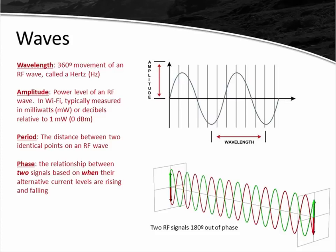The wavelength is an entire 360-degree movement of an RF wave — this is 1 hertz. Waves have important characteristics like amplitude, which is the strength or power of the wave. The strength attenuates or weakens as it travels through free space and as it passes through materials like walls, doors, and floors. The period is the distance between two identical points on an RF wave. Phase is a characteristic when two waves are compared with one another — they can be in phase or some degree out of phase. When two waves are 180 degrees out of phase, they can completely cancel the signals.